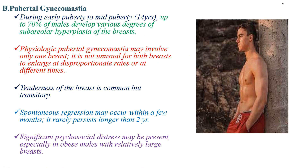The second type of physiologic gynecomastia is pubertal gynecomastia. During early to mid puberty, up to 70% of males develop various degrees of subareolar hyperplasia of the breast. It may involve only one breast, and it is not unusual for both breasts to enlarge at disproportionate rates or at different times. Tenderness is common but transitory, and spontaneous regression may occur within a few months, rarely persisting longer than 2 years.